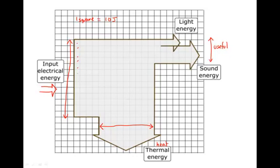2, 3, 4, 5, 6, 7, 8, 9, 10, 11, 12, 13. So 13 times 10 will give us 130 joules of energy, electrical energy going in.